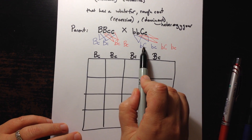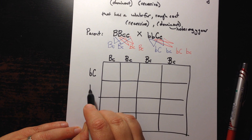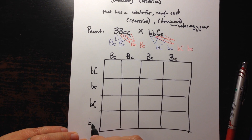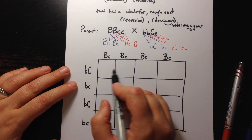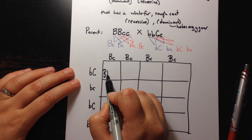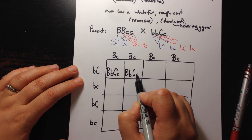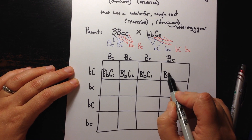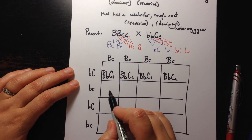On this side we put the other gametes: little b big C, little b little c, little b big C, little b little c. Then we combine these gametes with one another, putting the same letters together — the B's and the C's — and keep going until we have completed the whole Punnett square, all 16 squares, because they are not necessarily all going to be the same.